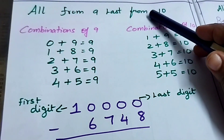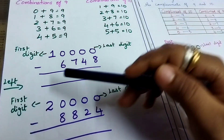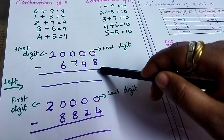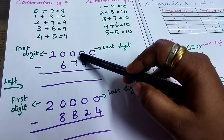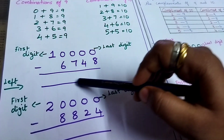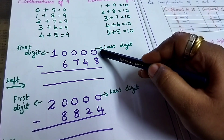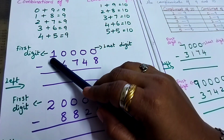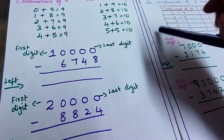All from 9, last from 10. In Vedic Maths, we always solve from the left-hand side. In our regular Maths, what we do is solve the ones place, tens place, hundreds place like that. But in Vedic Maths, you follow the left-hand side. So here this is your last digit, and this is your first digit. There are 3 steps you should follow in this.